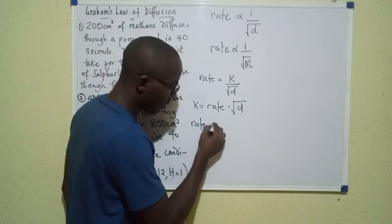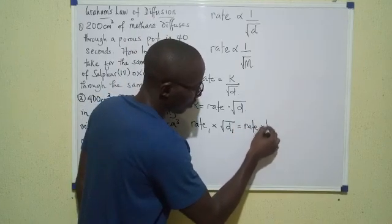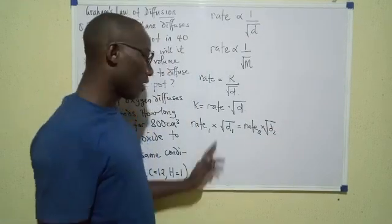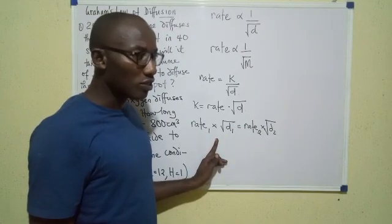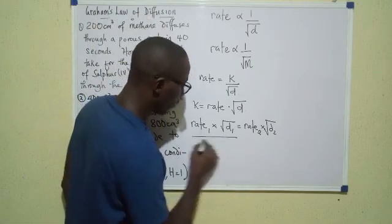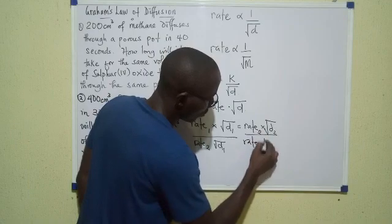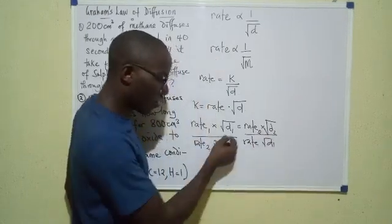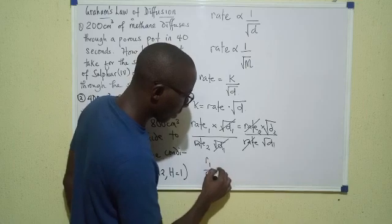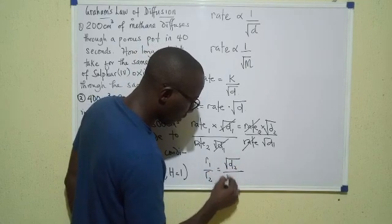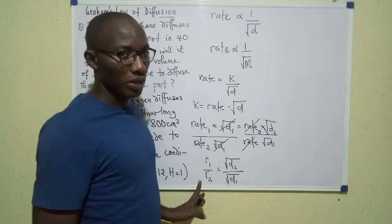Now since rate times root d is constant, it means that I could write rate 1 times root d1 equals rate 2 times root d2. And from here, if I divide both sides by rate 2 root d1, root d1 will cancel out and rate will cancel out, so that I'm left with r1 over r2 equals root d2 over root d1. So this is what we use to solve some questions on Graham's law of diffusion.